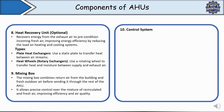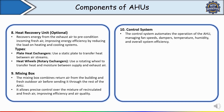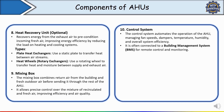The next component is the control system. The control system manages the operation of the AHU including fan speed, temperature settings, humidity levels, and airflow rate. It automates AHU operation — managing fan speed, dampers, temperature, humidity, and overall system efficiency. In a smart building, the AHU control system automatically adjusts fan speed and cooling output based on occupancy and external weather conditions, ensuring optimal indoor comfort while saving energy. It is often connected to a building management system for remote control and monitoring.